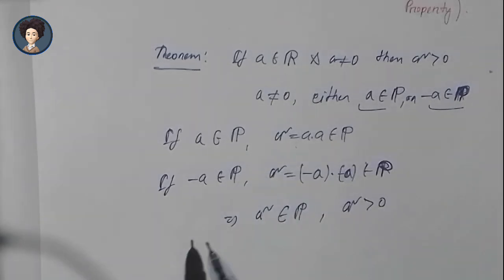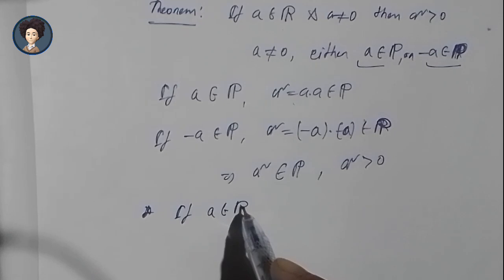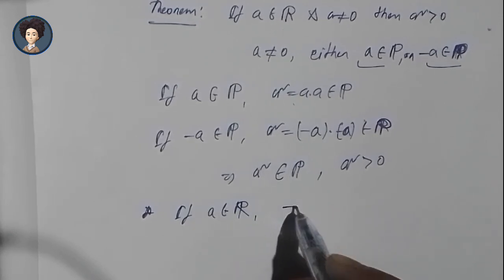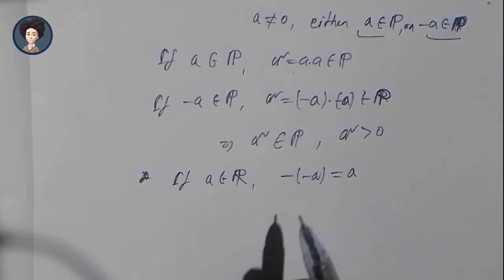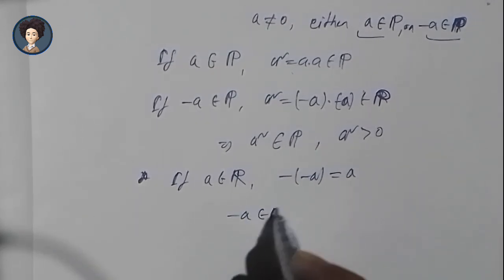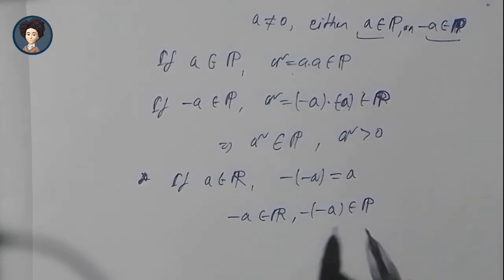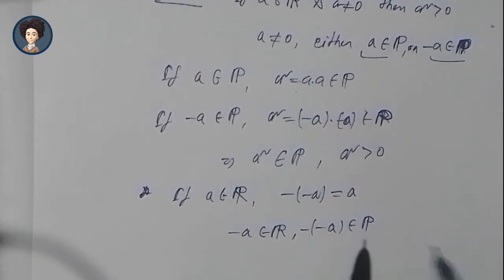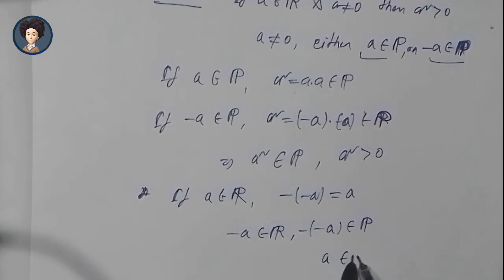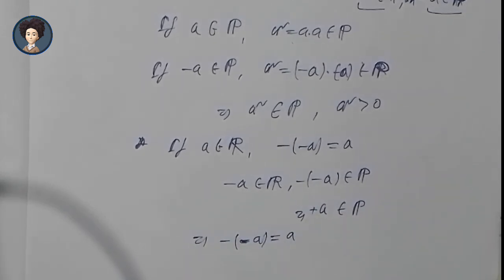The next result we need is: if A belongs to ℝ, then minus of minus A equals A. By the trichotomy law, since minus A belongs to ℝ, minus of minus A belongs to P. This means minus of minus A must equal A. Therefore, minus of minus A equals A.